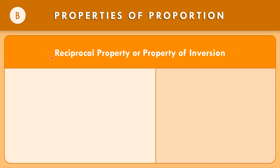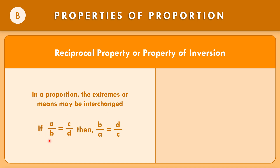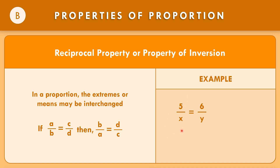Property B: the reciprocal property or property of inversion. In a proportion, the extremes or means may be interchanged. If A over B equals C over D, then the reciprocal of A over B, that is B over A, equals the reciprocal of C over D, that is D over C. In the given example, 5 over X equals 6 over Y. The reciprocal gives X over 5 equals Y over 6. Multiplying the means and extremes: 6 times X equals 6X, and 5 times Y equals 5Y. So 6X equals 5Y.